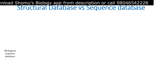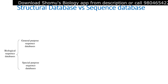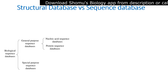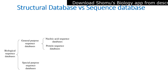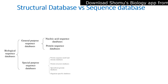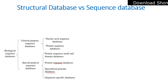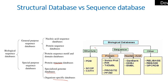Biological sequence databases can be classified into two types: general purpose sequence databases and specialized purpose sequence databases. General purpose databases include nucleic acid sequence databases and protein sequence databases. Specialized purpose databases include protein sequence motif and domain types, protein structural databases, specialized genome databases, and organism-specific databases.